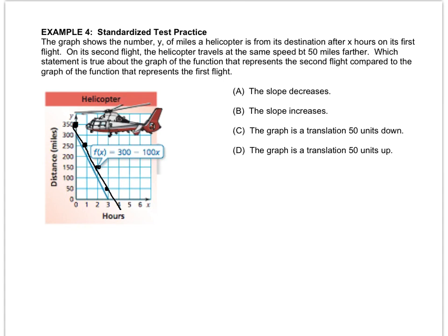Which statement is true about the graph of the function that represents the second flight compared to the graph that represents the first flight? Well, it's the same speed, so the slope isn't changing. And this graph is a shift up 50 because to go from 300 to 350, it went up. So it's letter D. The graph is a translation 50 units up.